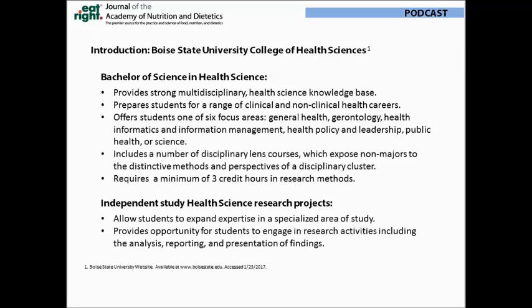A bit about the health sciences program at Boise State. It's designed to prepare students for a range of clinical and non-clinical health careers. Students select one of six focus areas including general health, gerontology, health informatics and management, health policy and leadership, public health, or science. Though Boise State does not have a dietetics program, some students have a pre-dietetics focus. The program requires students to take at least three credit hours in research methods and also permits students to further develop their research skills through an independent study course.